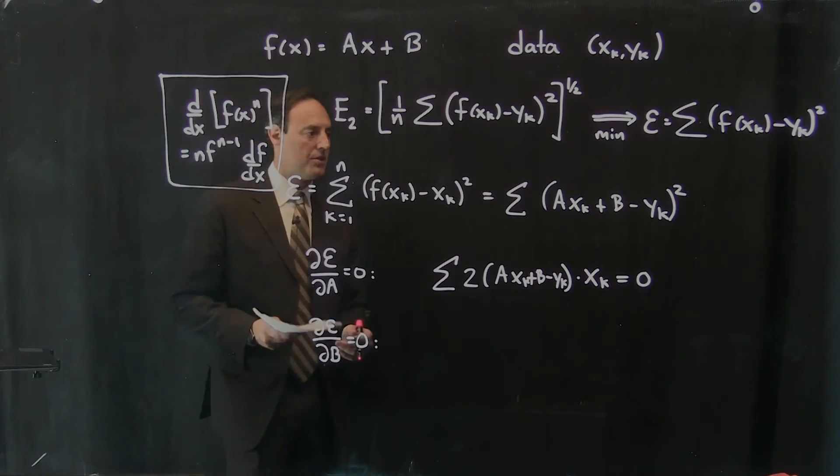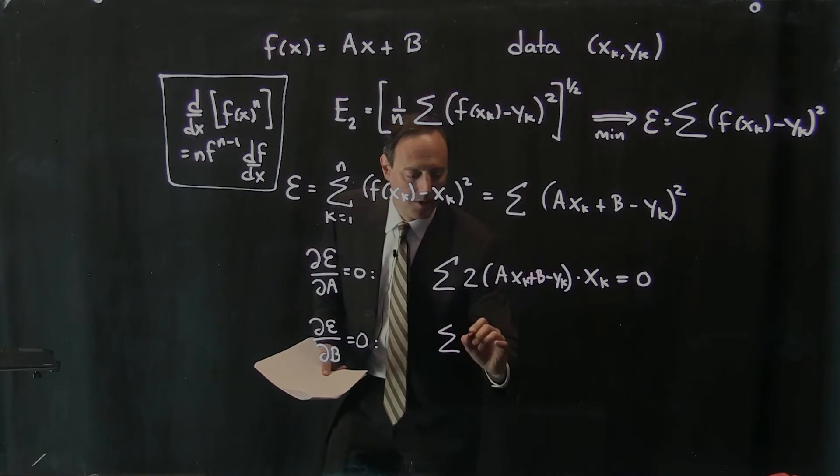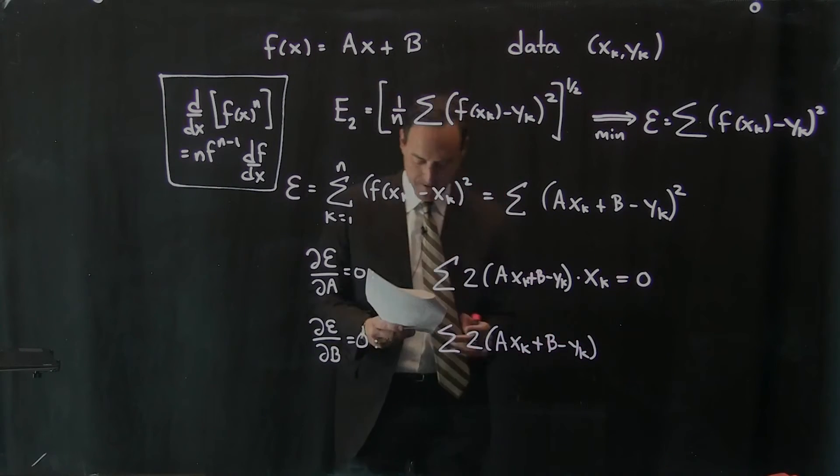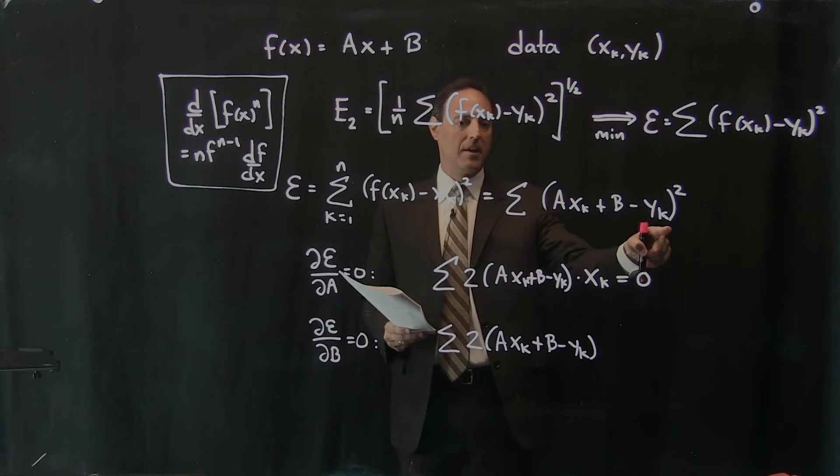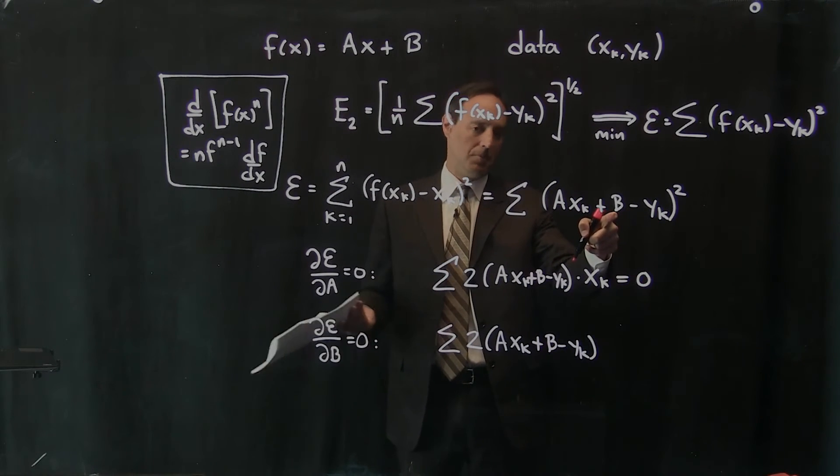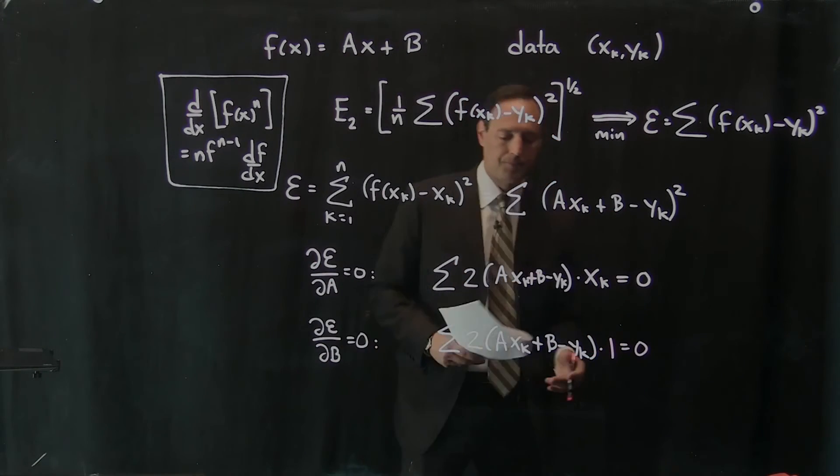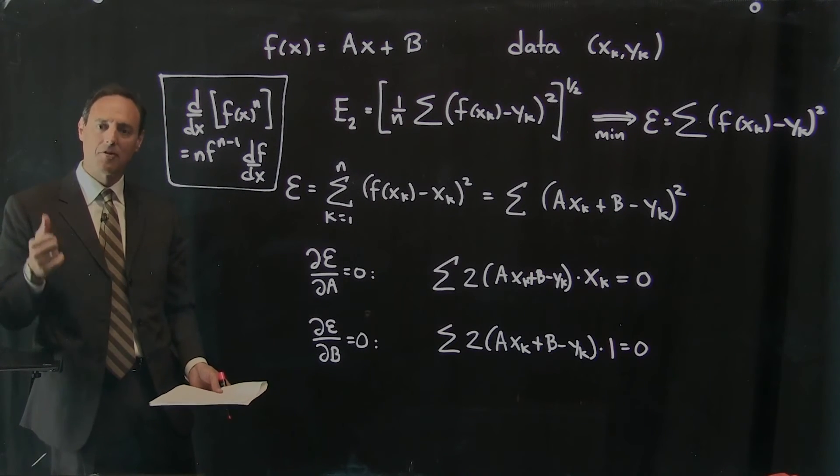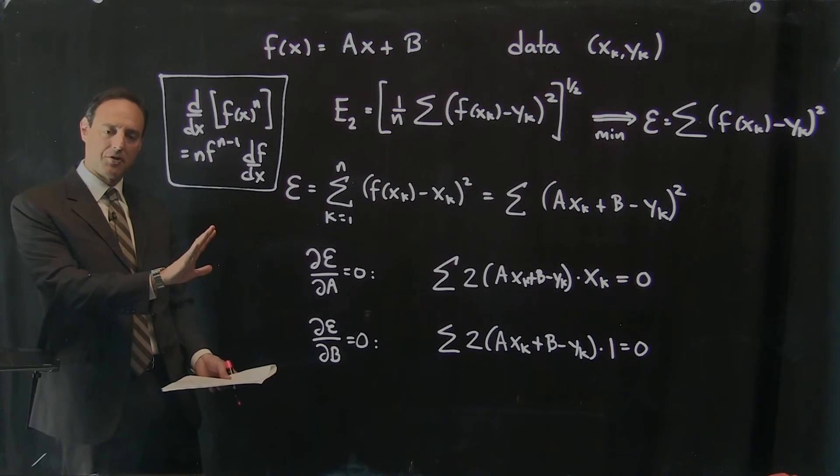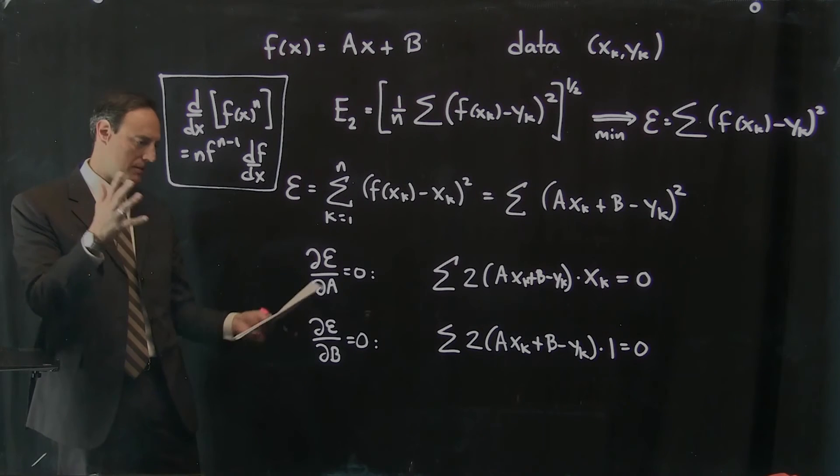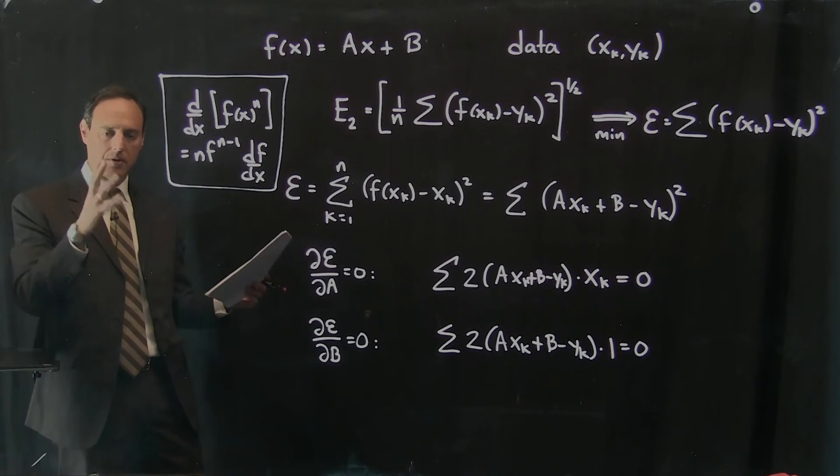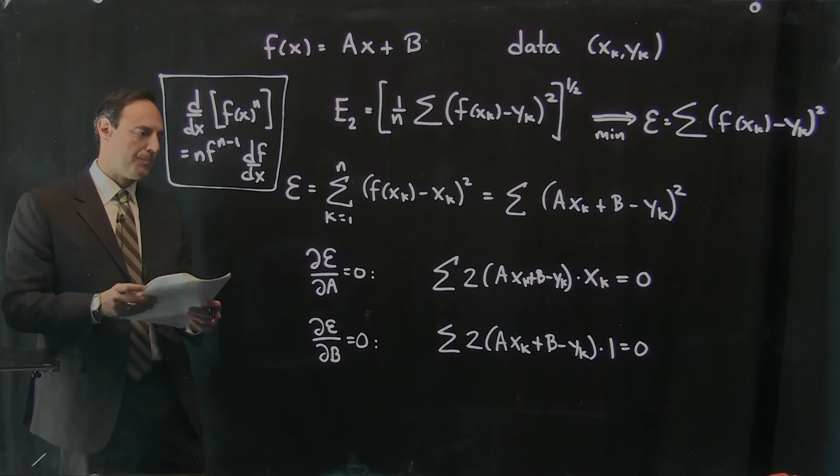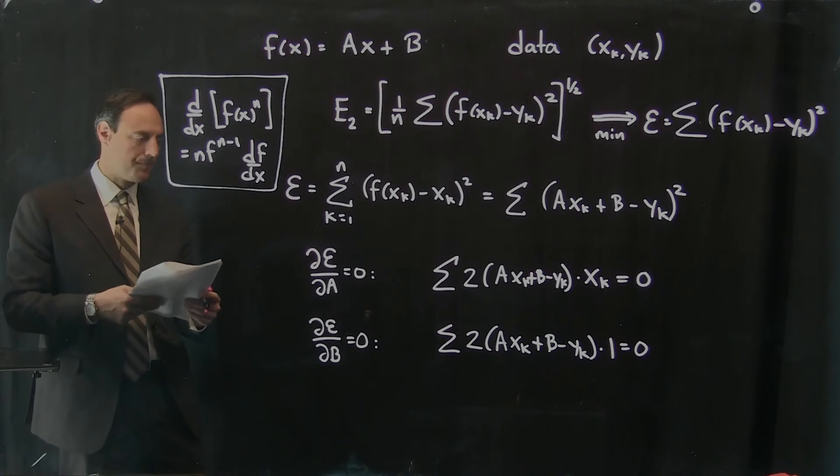If I do something similar with respect to B, I get a sum, again the 2 comes down, A*X_k + B - Y_k. Times, now the derivative of the inside with respect to B, dB/dB is 1. So now what I have is 2 equations for 2 unknowns. The 2 unknowns I have are A and B, and I have 2 equations I have to solve for the A and B. That's as simple as it gets. That's it right there. And that's all we have to do with this differential calculus. It's a simple power law rule, and that's going to give me exactly what I need here to come up with my formula.